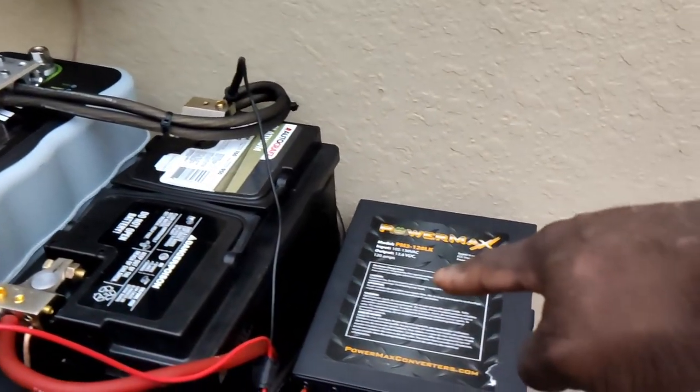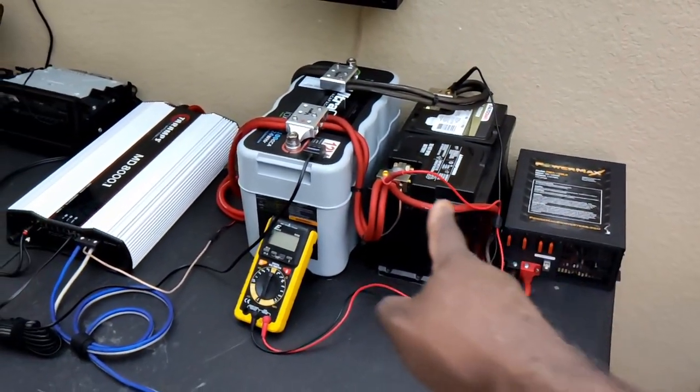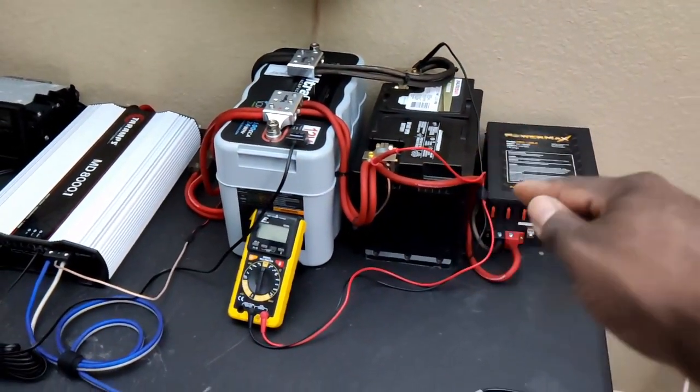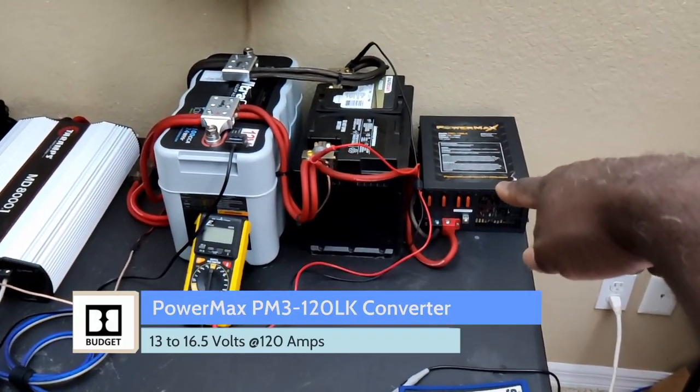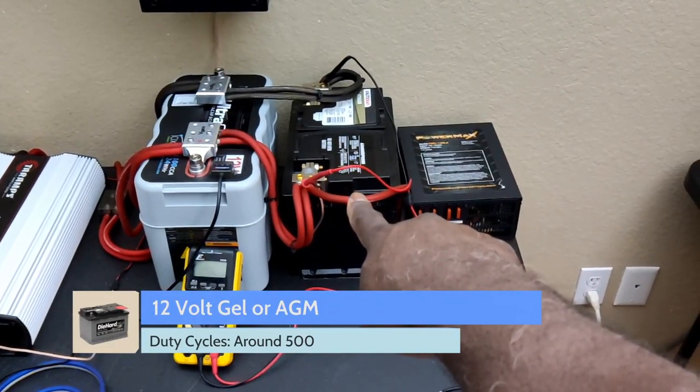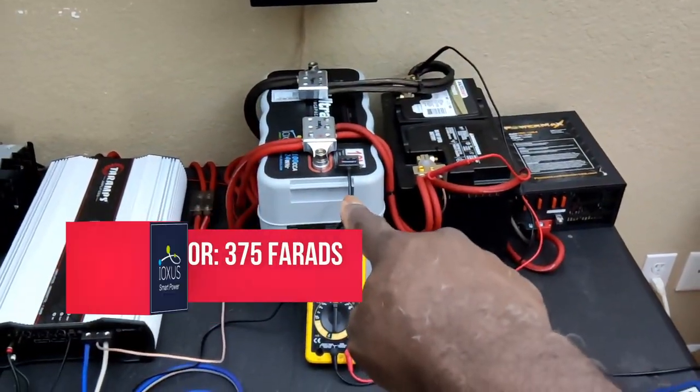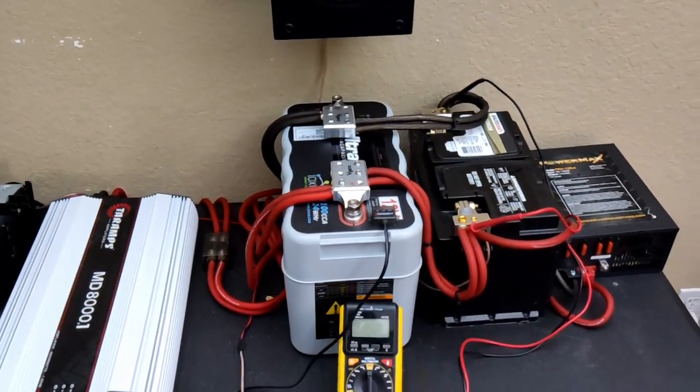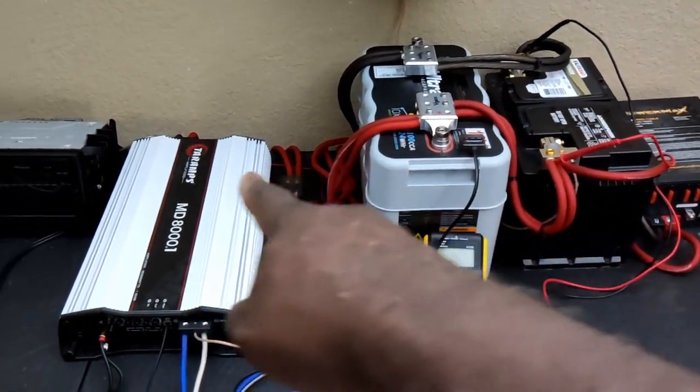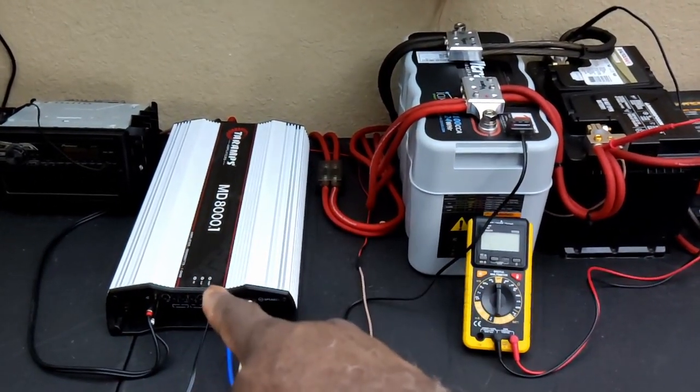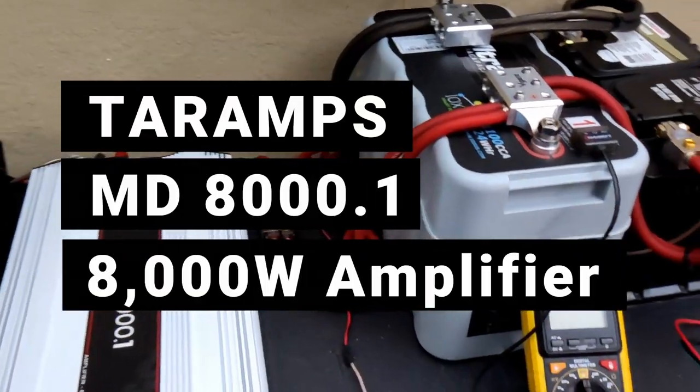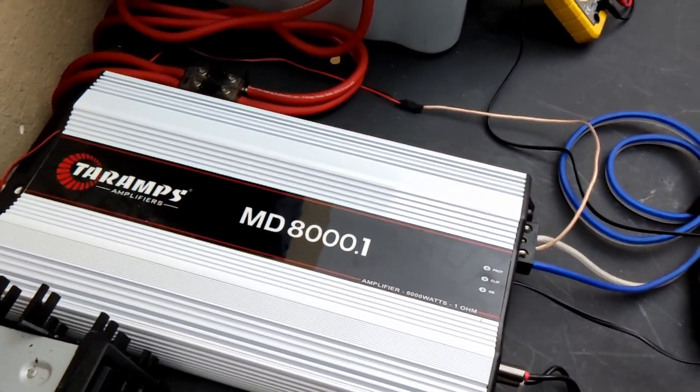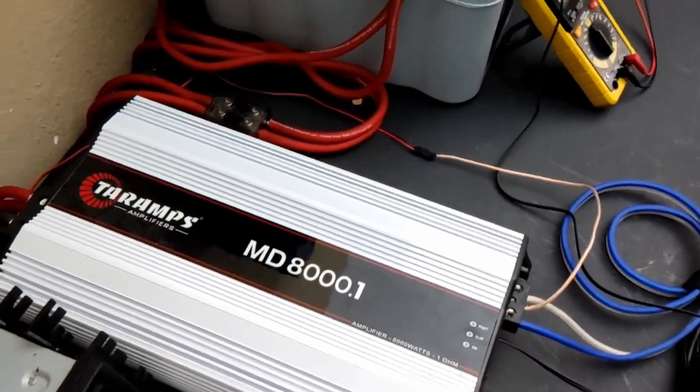In my case, I'm going to be using a 120 amp converter. This is what you use in your home when you want to power any of your car audio electronics. I have it connected to a 12 volt AGM battery. The AGM battery is connected to an ultra-capacitor, and it will give you a total of 375 farads. This is ultimately connected to an amplifier. This amplifier is the Tyamps MD8000.1. This is an 8,000 watt RMS amplifier at 1 ohm.